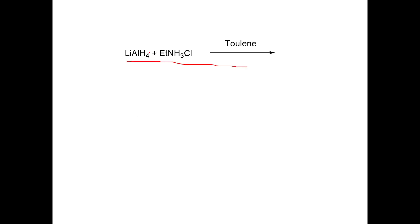Let's look at the first question. We have lithium aluminum hydride plus a quaternary ammonium salt in the presence of toluene. We have to write down all the products and byproducts for this particular reaction.